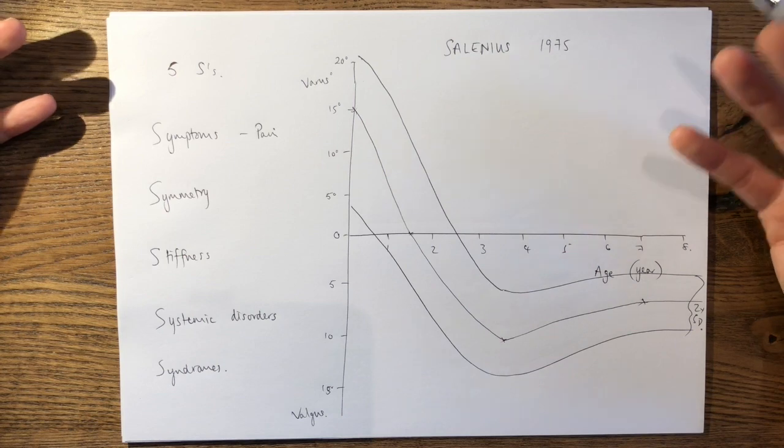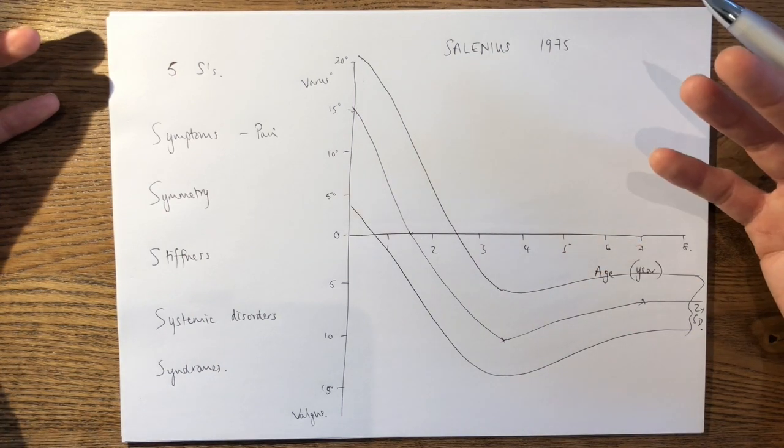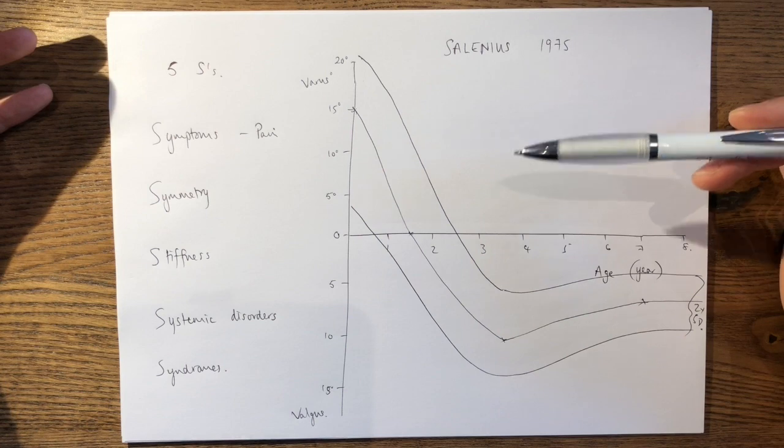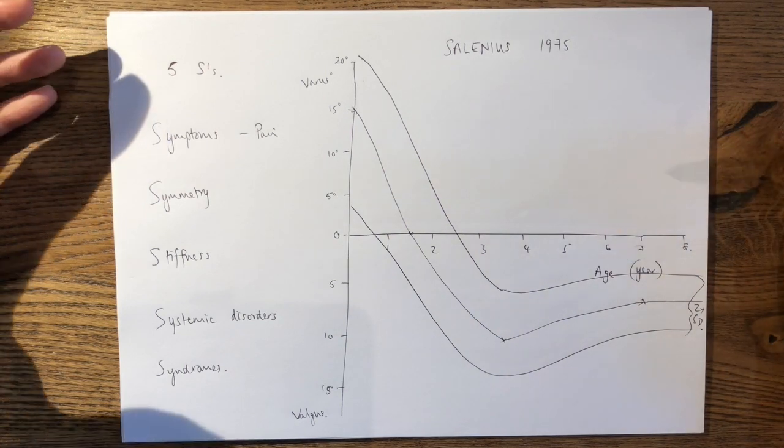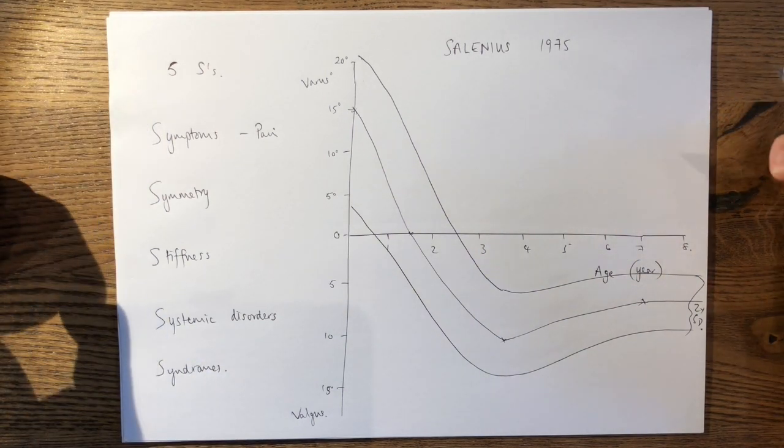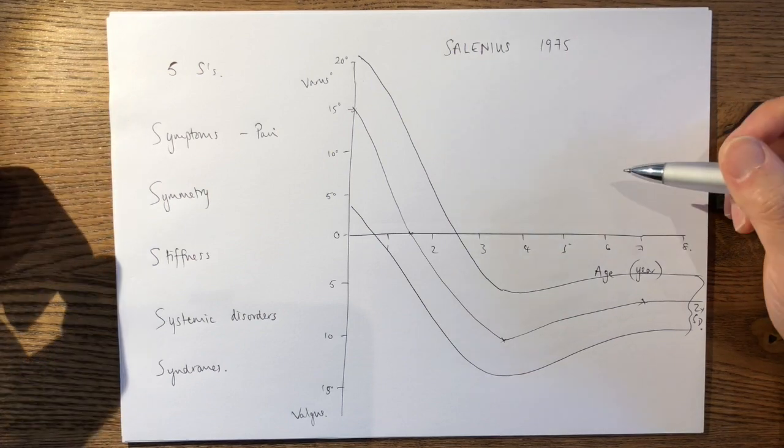So overall, this is very useful to explain to the examiner to show that you understand what is normal and when you would treat a patient with an angular deformity of the lower limbs.